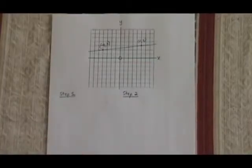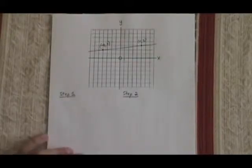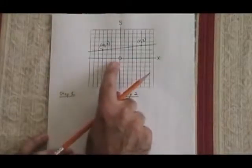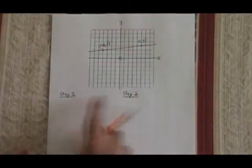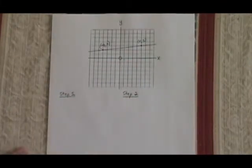To find the equation of a straight line when we are given a graph that shows us some information about the line, there is a step 1 and a step 2 in the process you need to use.